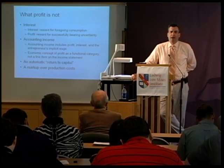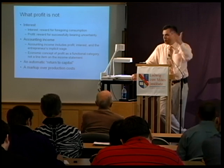Moreover, profit is not simply a markup over production costs. There's a popular misconception that you want to go into the business of building houses, it costs a certain amount, and you just add 5% and that's your selling price. We know from the theory of subjective value that the producer cannot arbitrarily set a selling price and receive it on the market — it depends on the valuations of consumers and the degree to which they value the good relative to their cash balances. Moreover, the costs of production are not just exogenously given; they depend on how much firms are willing to pay for factors of production. So this idea of profit as a markup is contradicted by the theory of imputation we studied this morning.